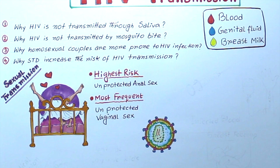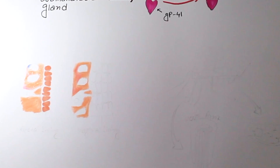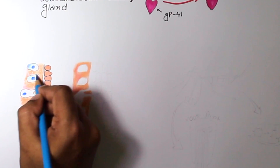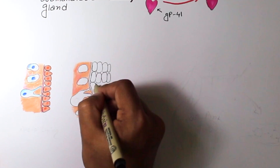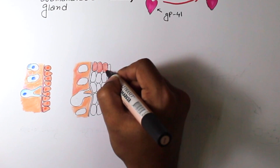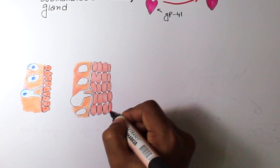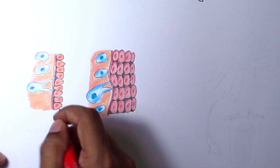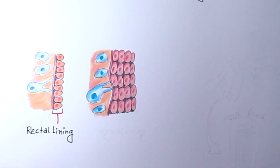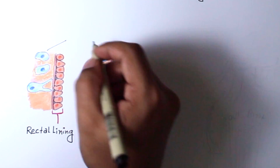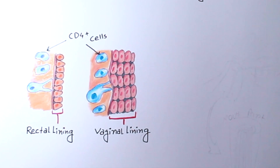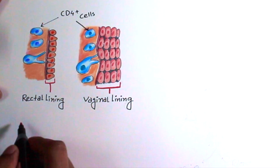The rectal mucous membrane is very thin and fragile compared to the vaginal mucous membrane, so chances of traumatic tearing are greater during unprotected anal sex. That is why homosexual men have the highest risk of HIV transmission. Another reason is the readily accessible CD4-positive cells present just beneath the rectal mucosa.